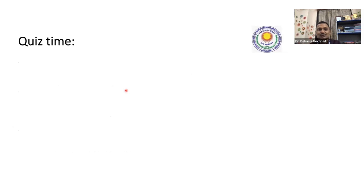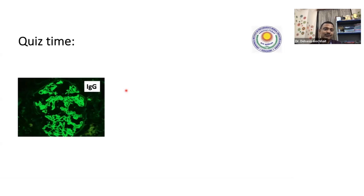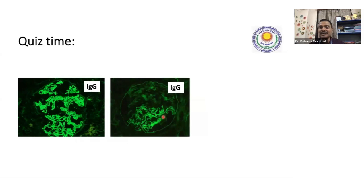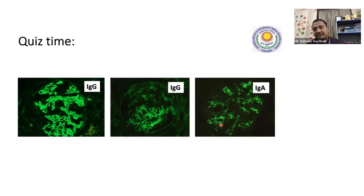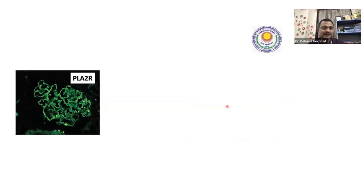Now it is quiz time. I will show some images — try to recall whatever I've told you. Here: staining intensity is 3+, distribution is in the membrane, and it is linear. So the answer is anti-GBM disease, or NTGBM disease. Especially for NEET and similar exams, you can get image-based questions. Here you can clearly see mesangium versus membrane deposit. PLA2R — what is its utility? It is used in membranous glomerulopathy to differentiate primary versus secondary, because primary and secondary have different treatments.